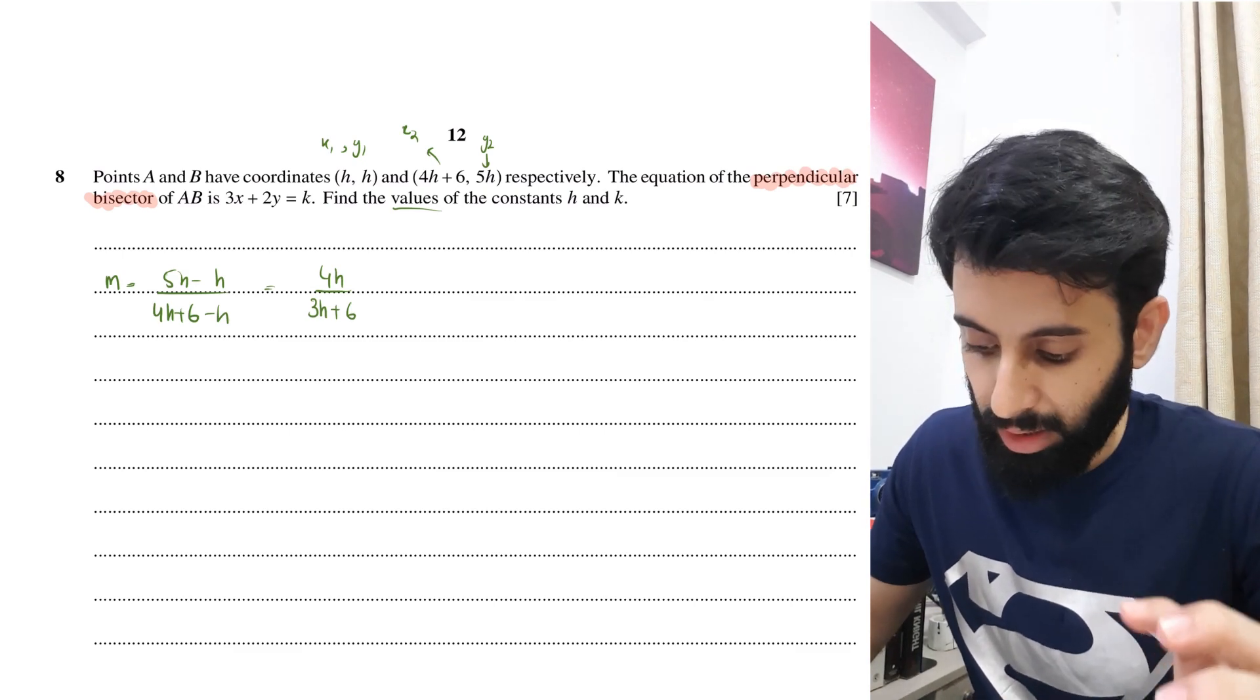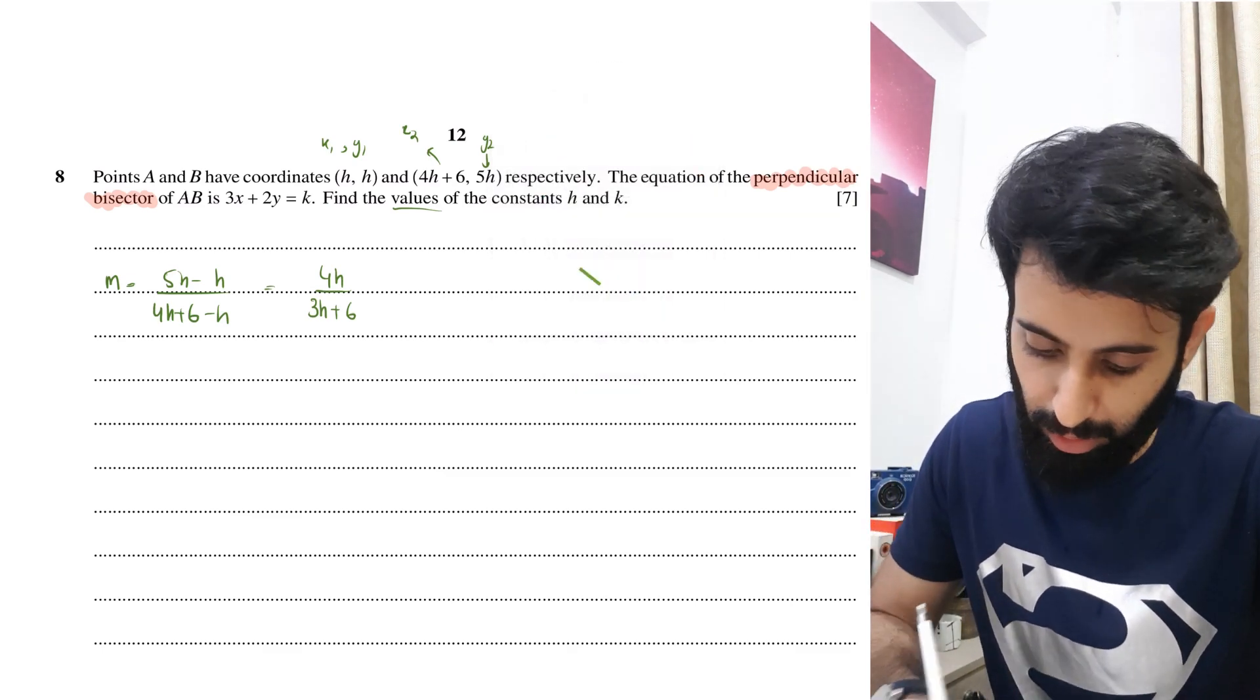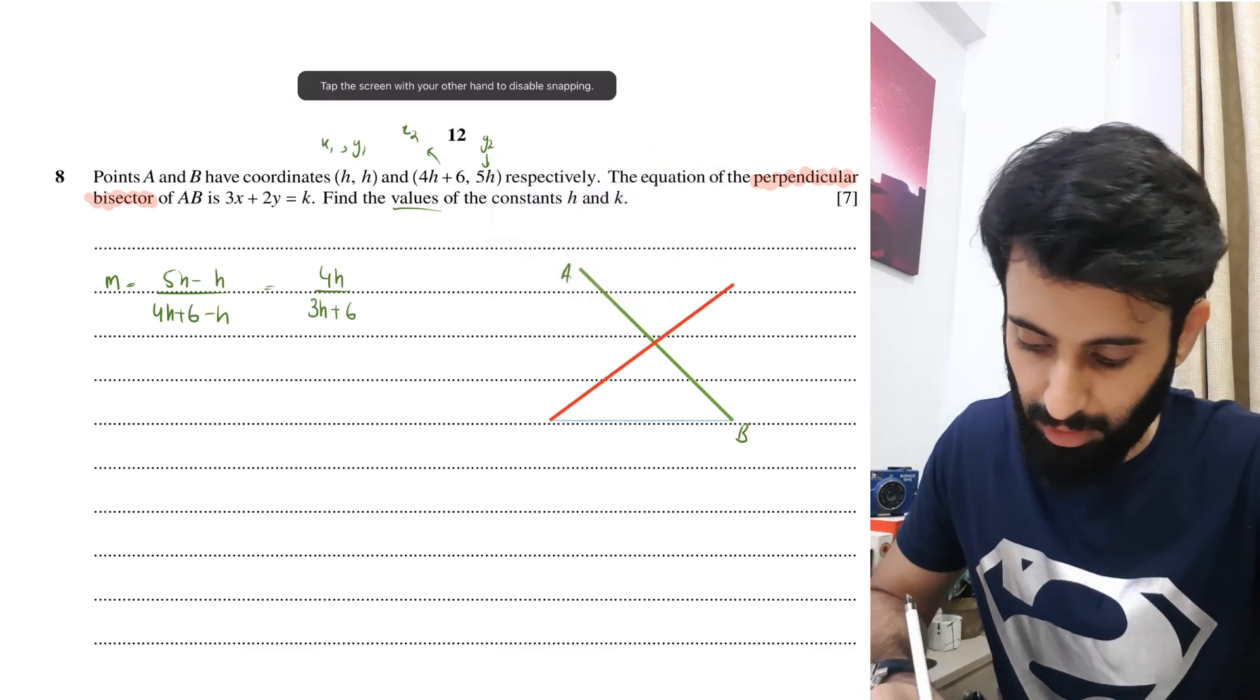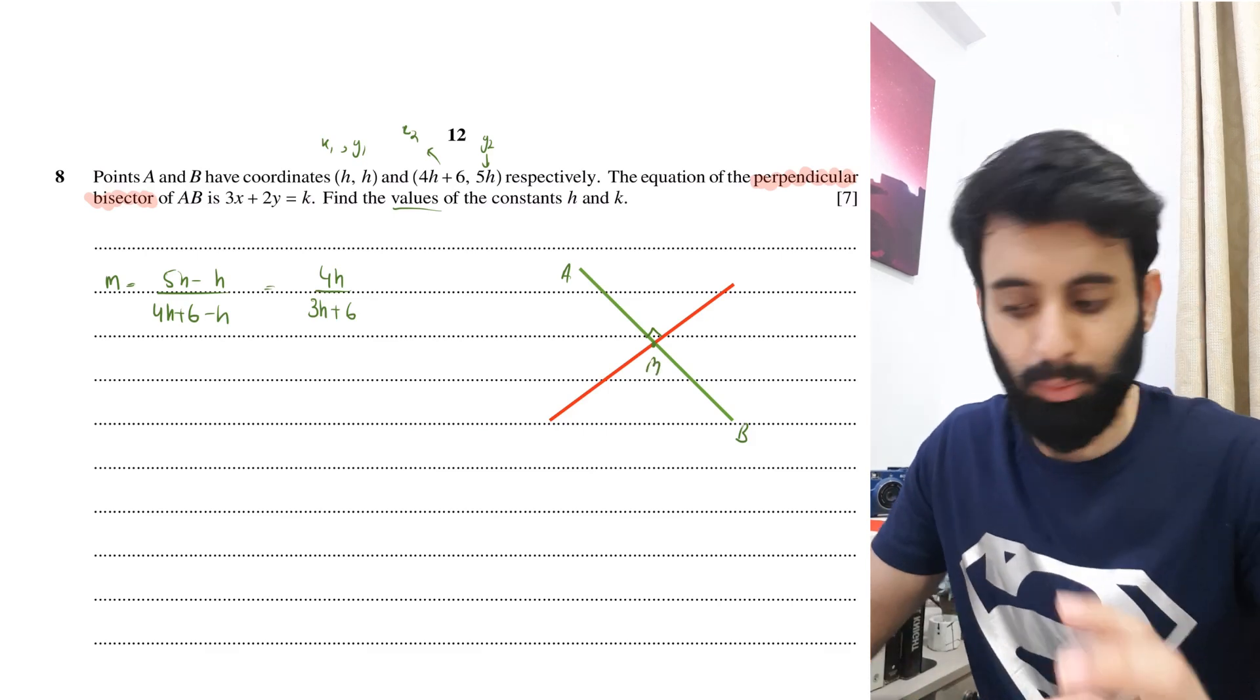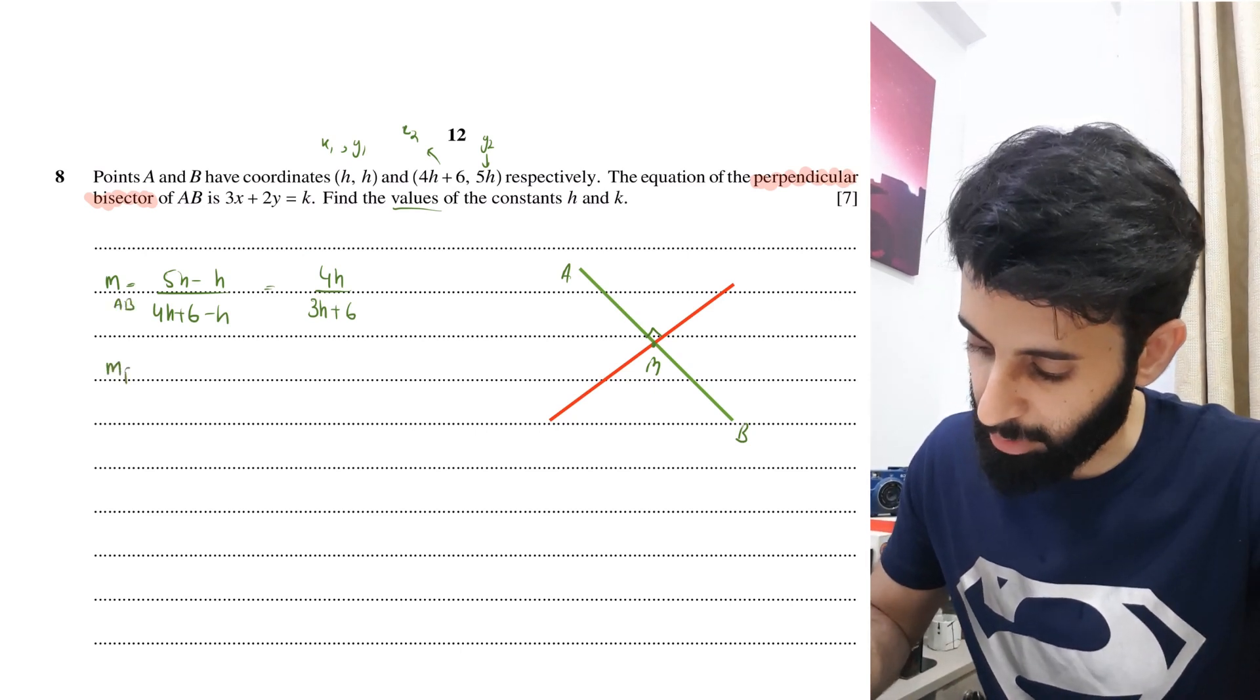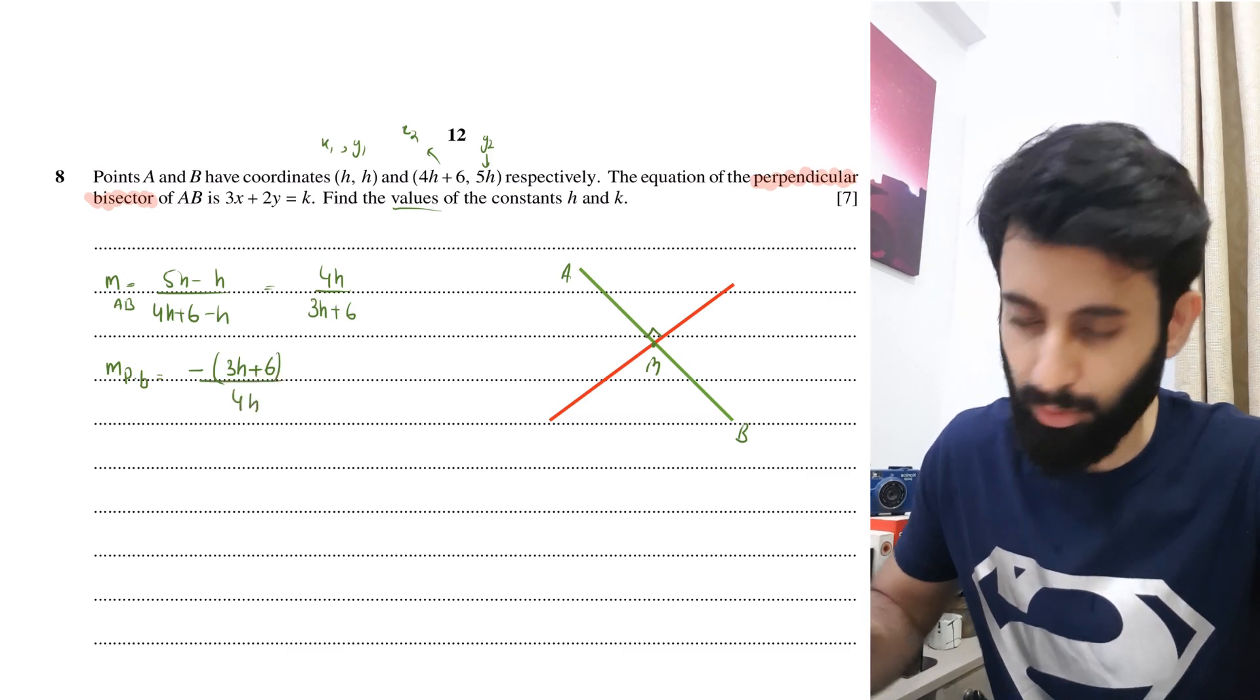So what that basically means is that when I take the negative reciprocal of it, that's how I'm going to get the gradient of the perpendicular bisector. Let me just illustrate this for you real quick. If this is what the line that joins AB looks like, the perpendicular bisector of AB is going to look something like this. It's going to be passing through the midpoint—that's what the word bisect means—and perpendicular means it's going to pass at 90 degrees. So, this is the gradient of AB. Now let's see what the gradient of the perpendicular bisector is going to be. We'll multiply it with a minus sign and then reciprocate it, so we have minus (3h + 6) upon 4h.